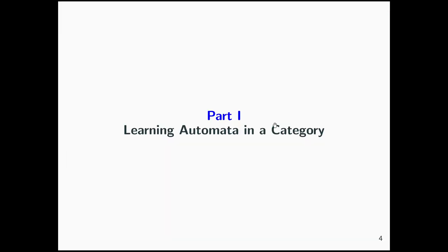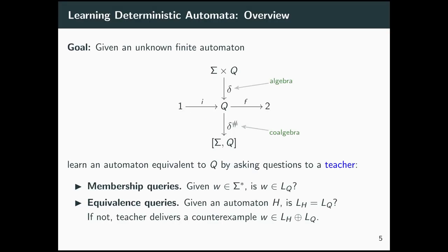As the basis of all this, let us start by discussing how to learn automata in a category, beginning with the case of classical deterministic automata. We are given an unknown finite automaton with a set of states Q, initial and final states, and transitions that can be modeled algebraically as a function from sigma times Q to Q, or co-algebraically as a function from Q into the function space from sigma to Q, just by currying. The goal is to learn an automaton equivalent to Q by asking questions to a teacher, which idealizes the idea of running tests on a black box.